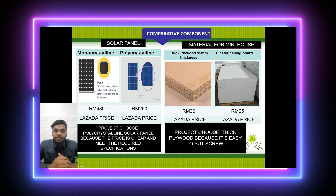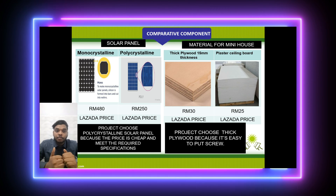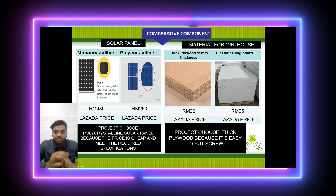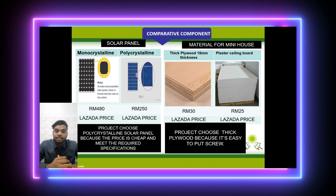The comparative components will be discussed next. Solar panels, which generate electricity from sunlight, are the first and most important component, divided into two categories: monocrystalline at RM480 and polycrystalline at RM250, based on Lazada pricing. We chose polycrystalline solar panels because they are inexpensive and have high durability.